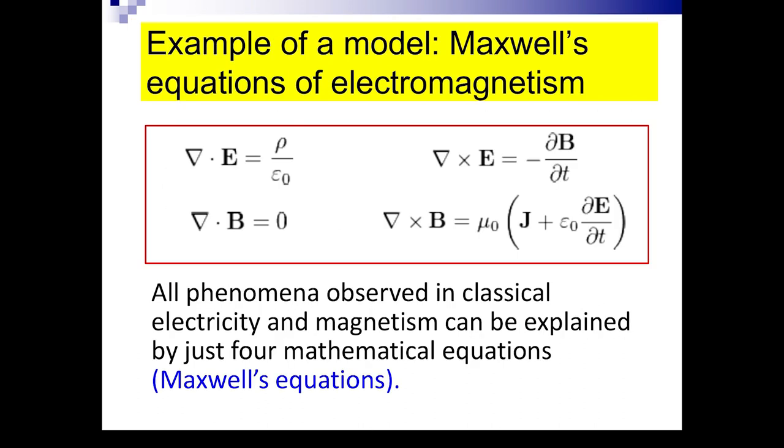I'll give you an example of a very important model. These are Maxwell's equations of electromagnetism. Four equations involving derivatives, partial derivatives. They are probably enough to describe all phenomena in classical electricity and magnetism. So in Maxwell's equations, the variables and the relationships are described by differential equations.